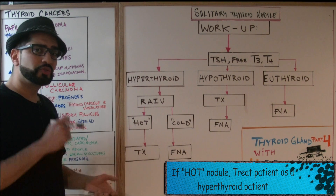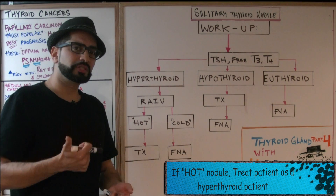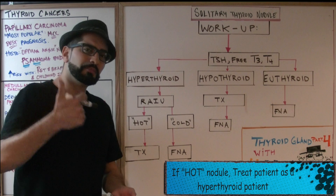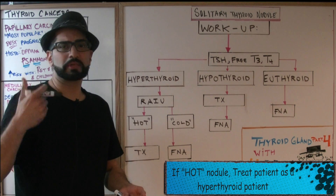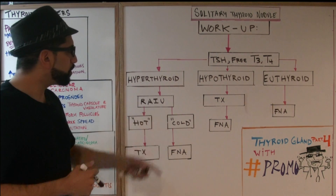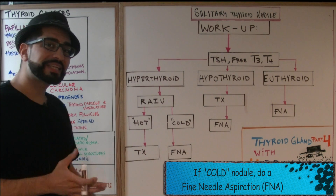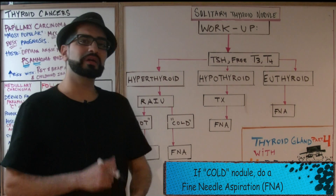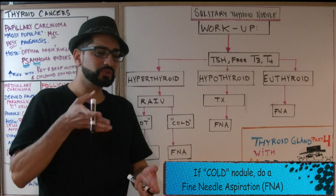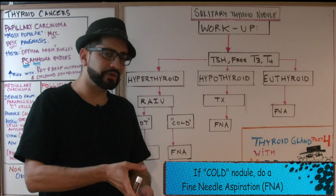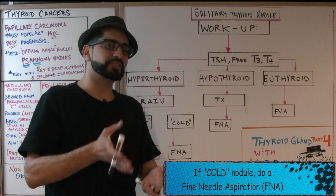If it's a hot nodule, you treat the patient just like you would treat for hyperthyroidism — meaning you treat with PTU (propylthiouracil) or you can use methimazole. If it's a cold nodule, you do an FNA — fine needle aspiration. This is the time when you actually do a biopsy of the thyroid gland to make sure the nodule is non-cancerous.